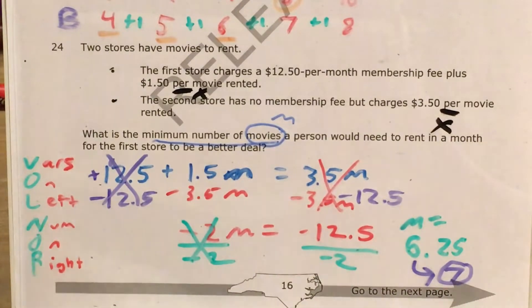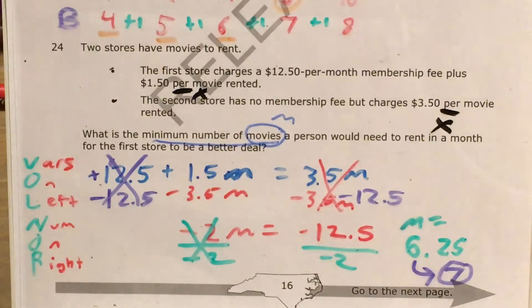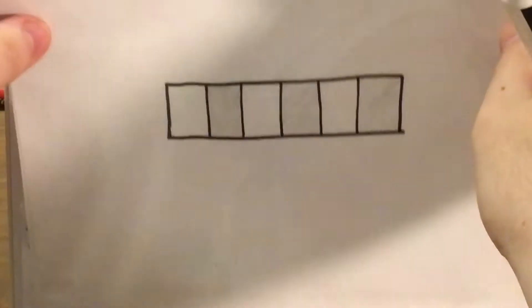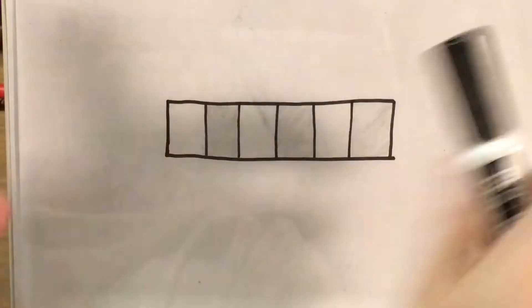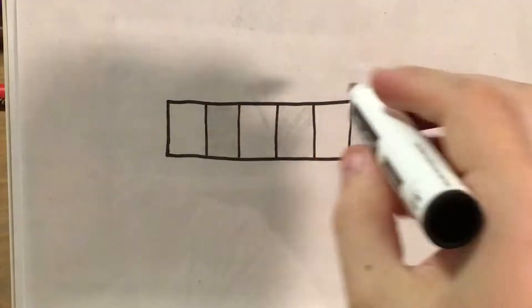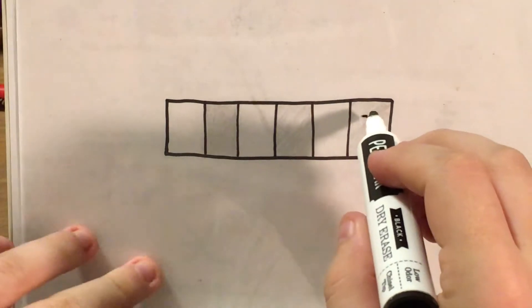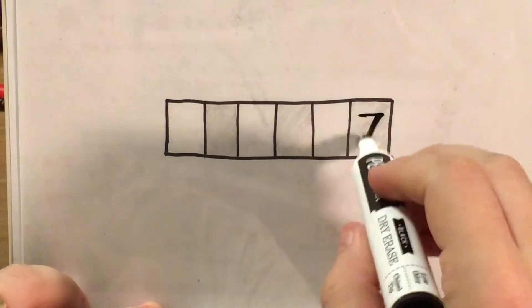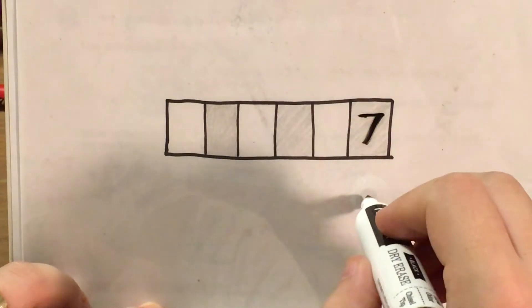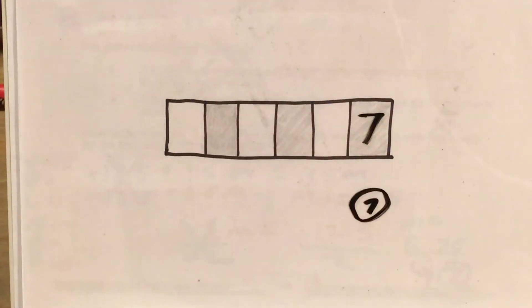Now I just need to fill that out in my gridded response page. My answer is 7 — I write 7 in the box, find my 7 bubble, and fill it in.